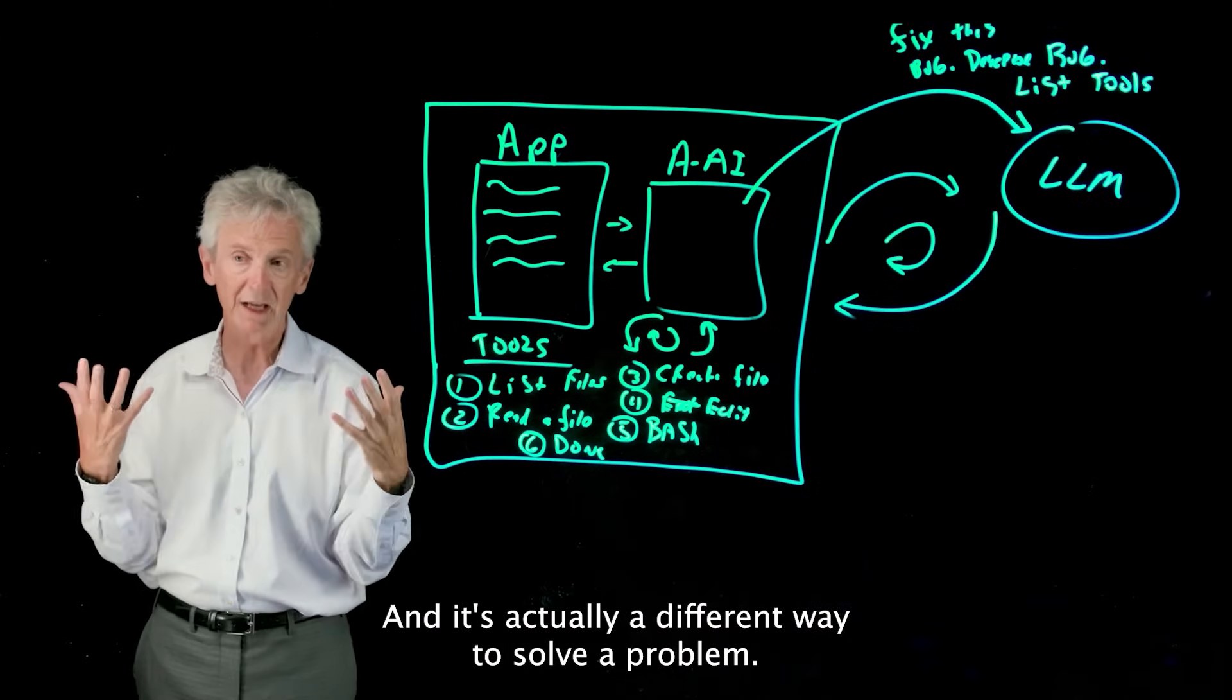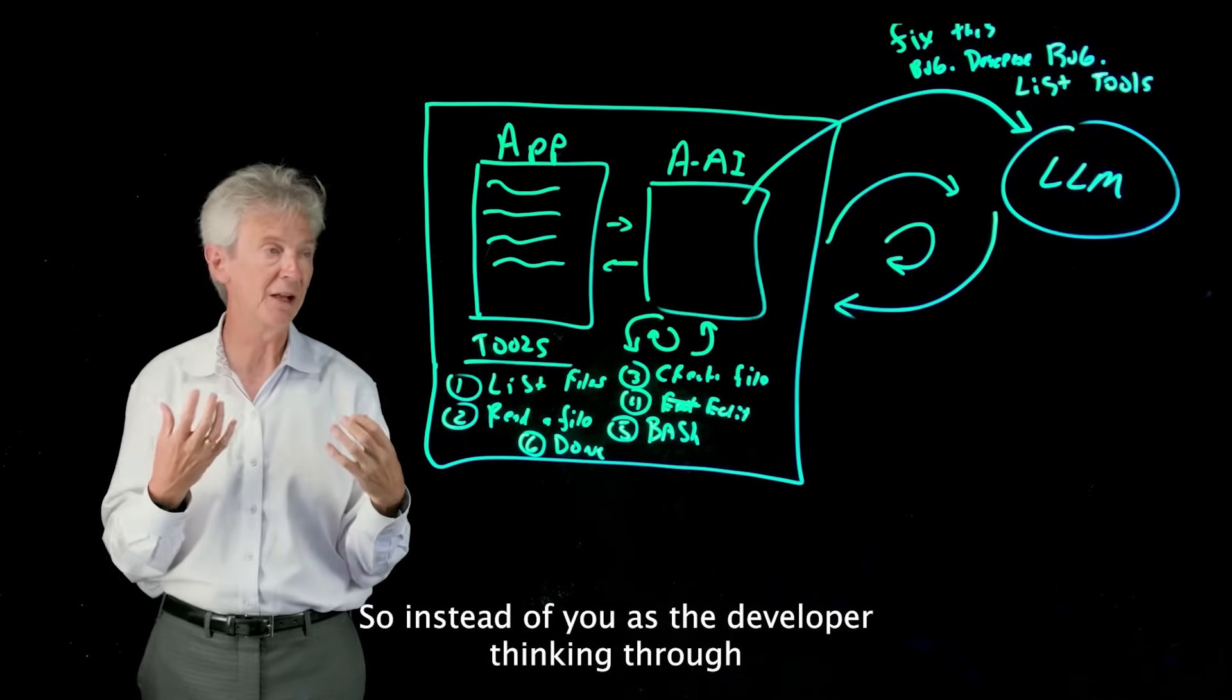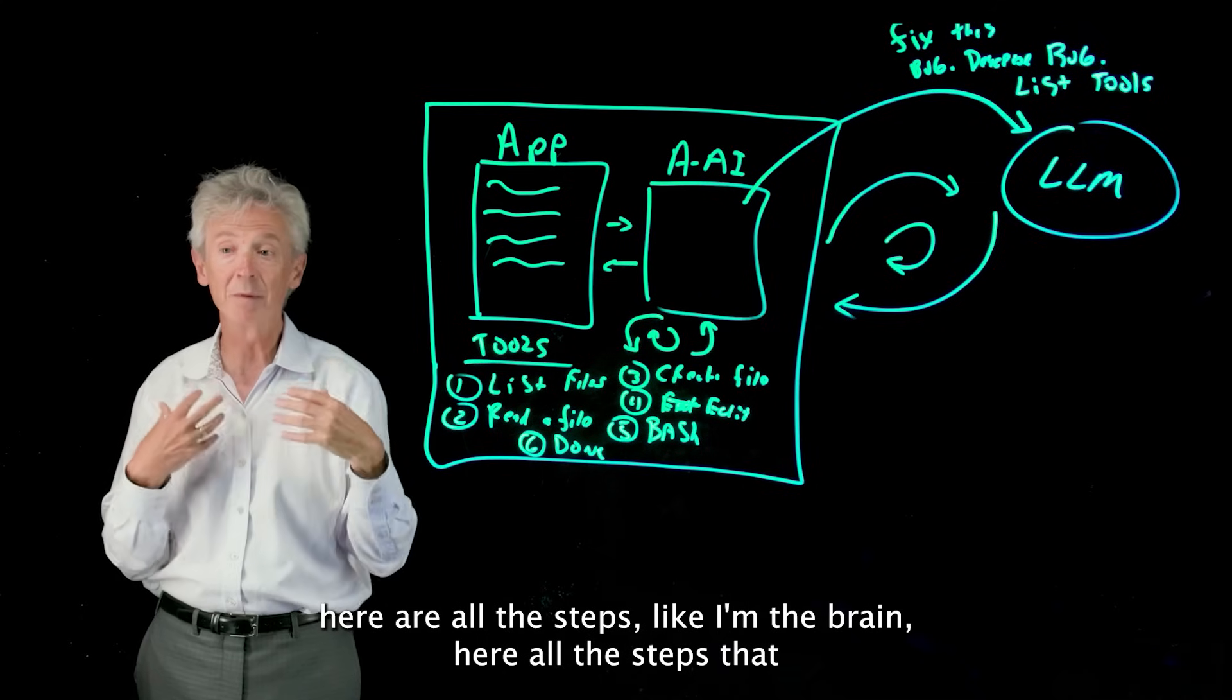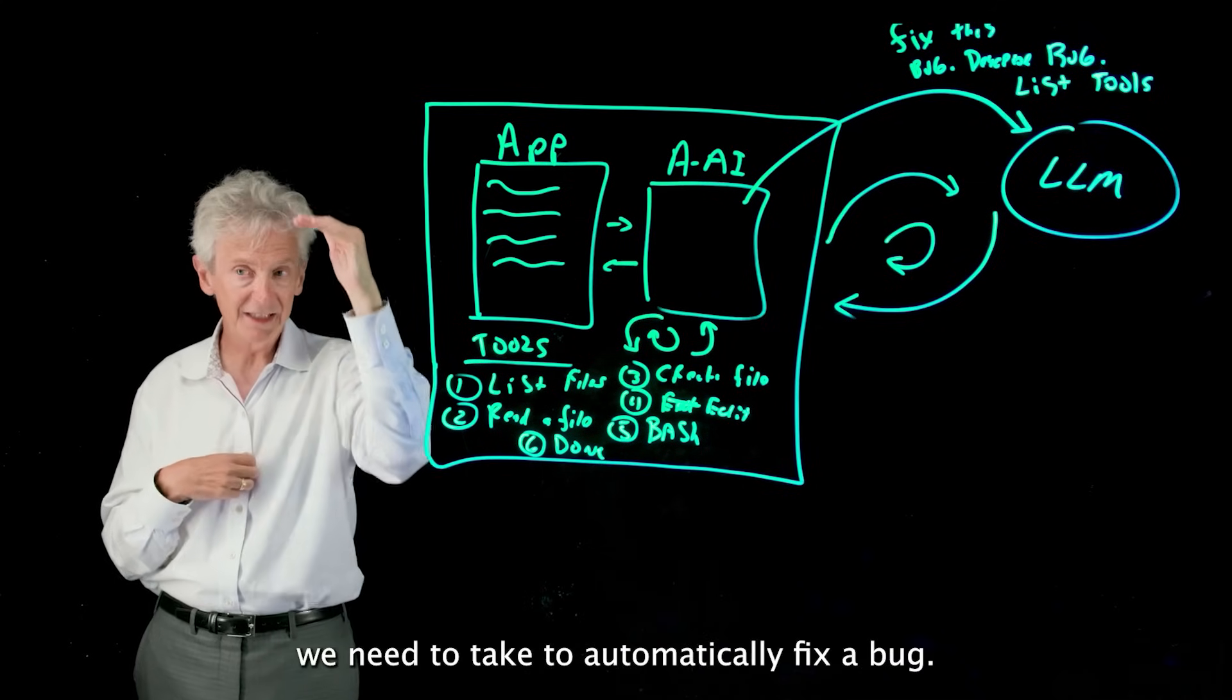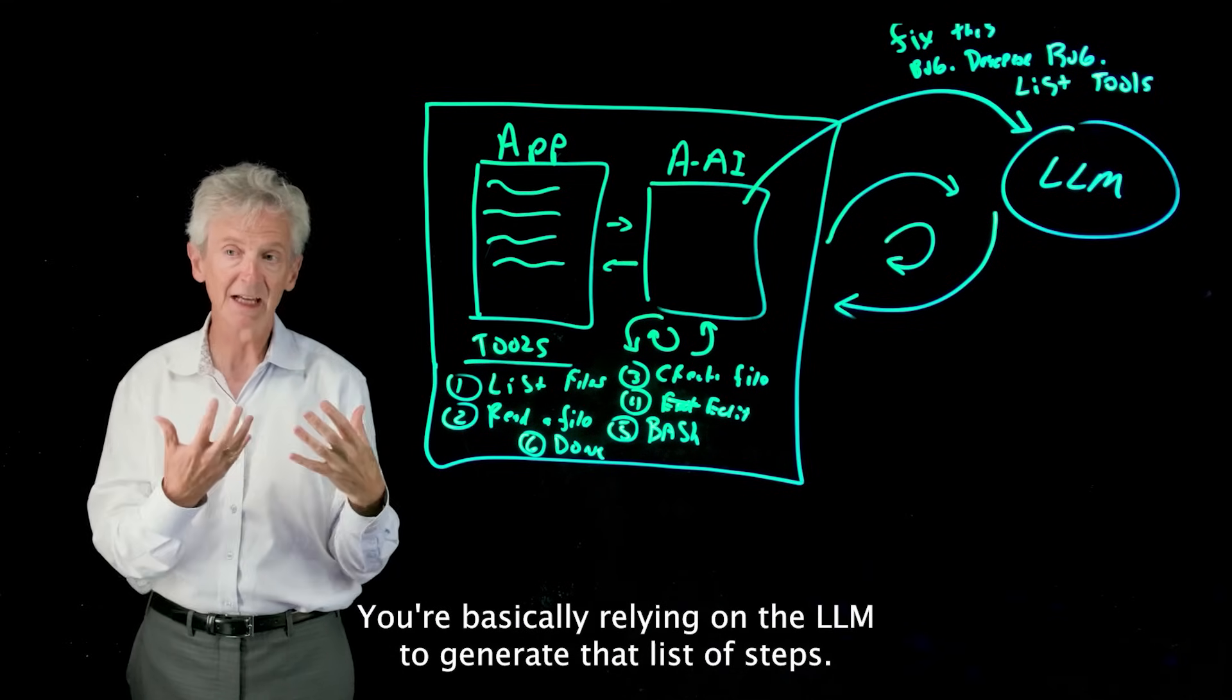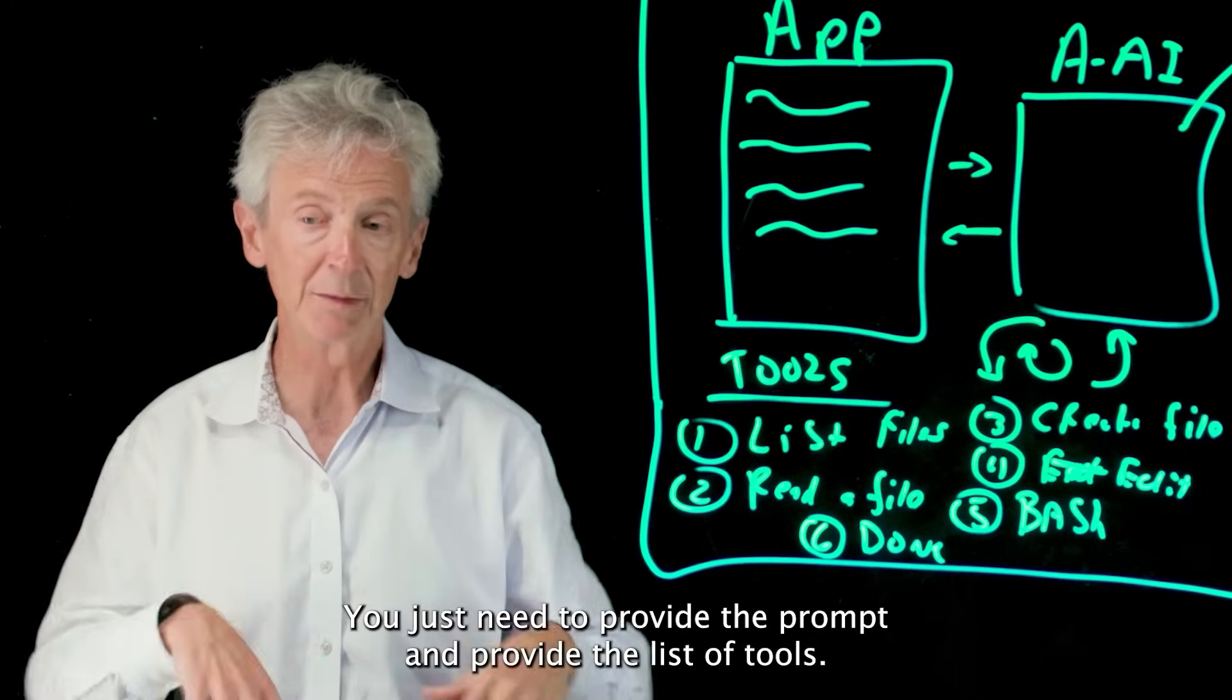And it's actually a different way to solve a problem. So instead of you as the developer thinking through, here are all the steps that we need to take to automatically fix a bug, you're basically relying on the LLM to generate that list of steps. You just need to provide the prompt and provide the list of tools.